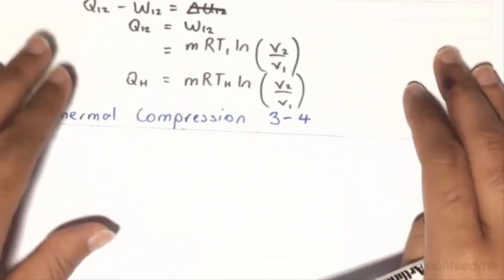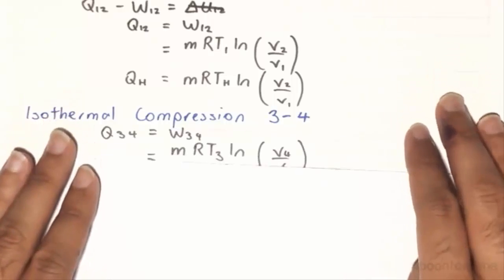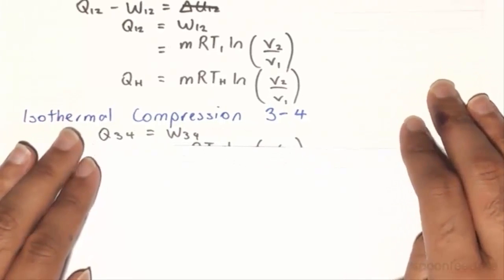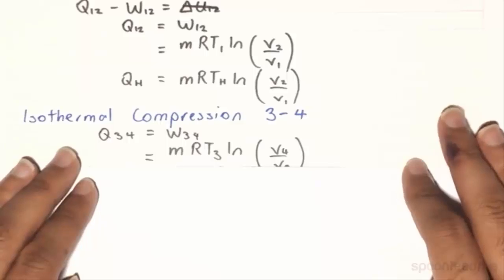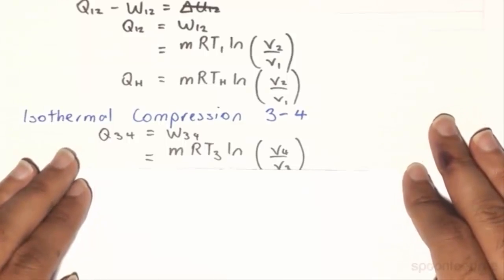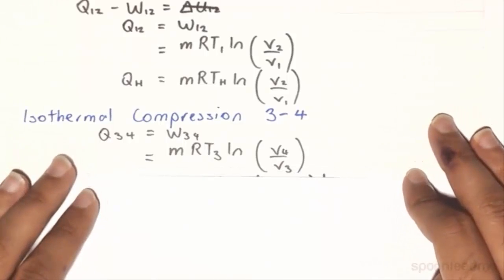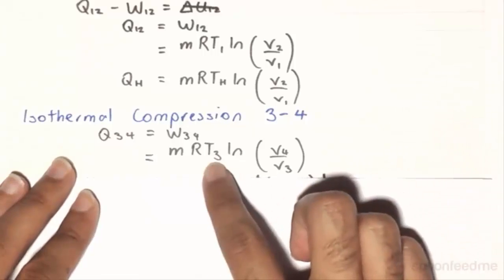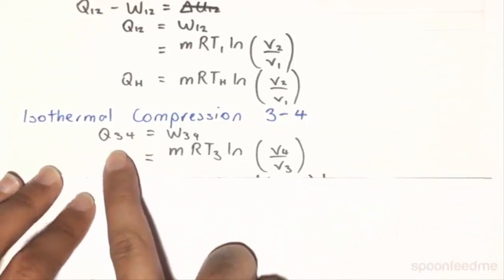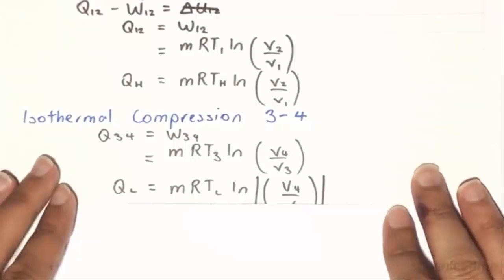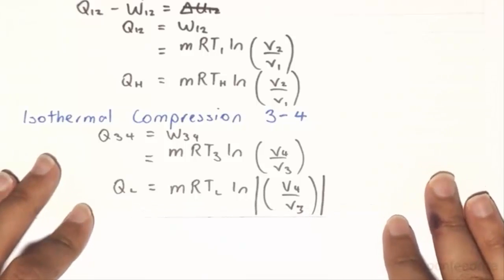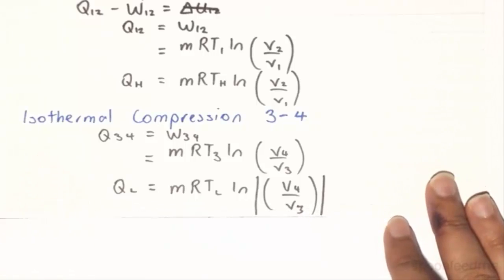Similarly, the isothermal compression at state 3-4, we have Q3-4 is going to equal to the work 3-4, and so the Q3-4 is equal to MRT3, the natural log of V4 on V3. And because T3 is equal to TL, and Q3-4 is equal to QL, we have QL is equal to MRTL, the natural log of V4 on V3.